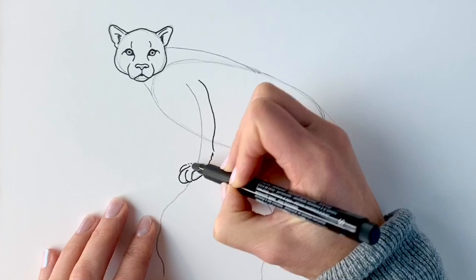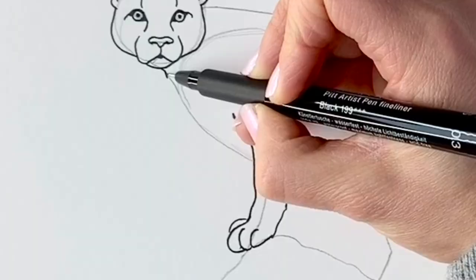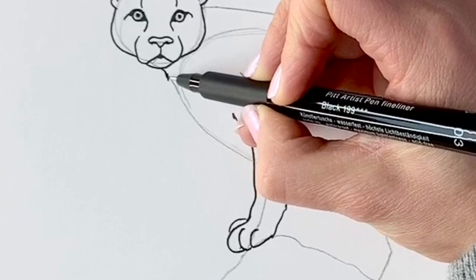Now we're going to be drawing the front, so the throat and the chest. It's a little bit furry, so I'm just drawing little dashes to show the fur. It's going to come all the way down and then inwards.